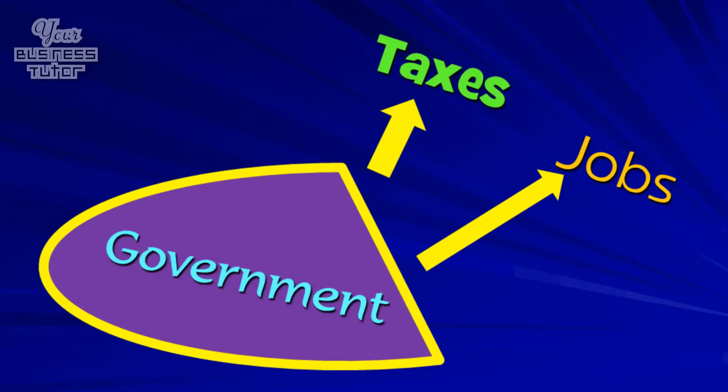Our third external stakeholder is the government. And they are interested in the business paying its taxes and creating jobs. They want a business to pay taxes because this is how the government finances its activities. For example, without tax revenue, the government wouldn't be able to afford to pay for things like hospitals and schools.